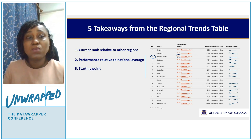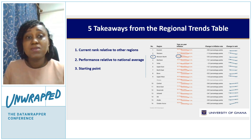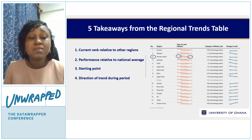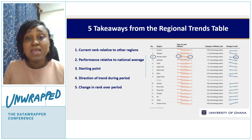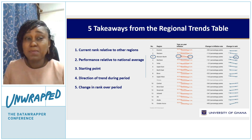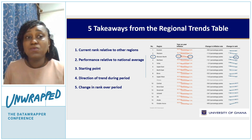You also get to see where you started from — the starting value — and then you see the trend: did the period indicator trend up, down, or did it stay stagnant? One thing I also like to add is the change in rank, because these tables were put in a report, so it already comes ranked by the ending value. But sometimes we want to know where you were at the beginning, and with the change in rank you get to see if you relatively outperformed other regions during the period or not.